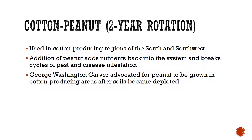Welcome to the third mini lecture for this chapter. We're going to pick up right where we left off, talking about different crop rotations that are pretty common in the United States. The next one we're going to look at is cotton-peanut, and as you could probably guess, this is more used in regions like the south and the southwest that grow a lot of cotton and peanuts.